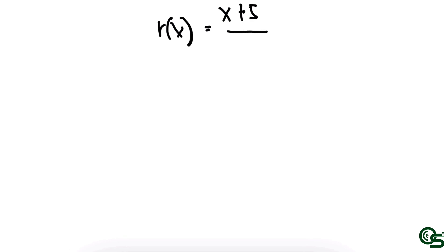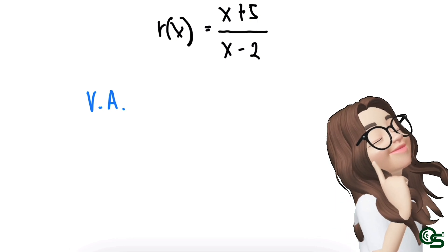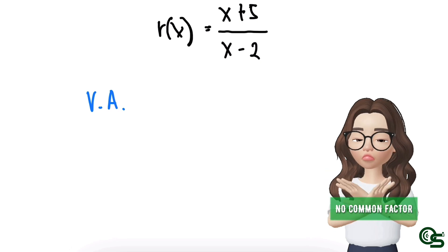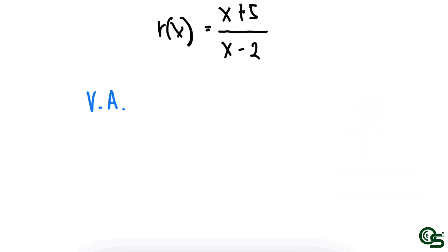Let us now proceed with the first example. We have r of x is equal to x plus 5 all over x minus 2. First, let us find the vertical asymptotes. To determine the vertical asymptote of a rational function r of x, find the zeros of the denominator that are not zeros of the numerator. We have to check if there are common factors that could be cancelled out. In this particular example, we do not have any, so we proceed directly with the denominator, which is x minus 2.